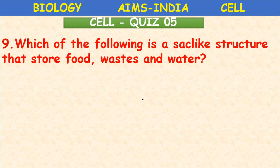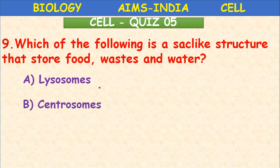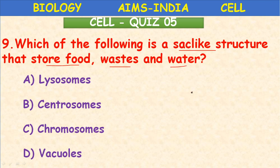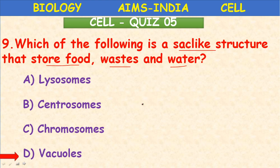Which of the following is a sac-like structure that stores food, wastes, and water — lysosomes, centrosomes, chromosomes, or vacuoles? In the exam, most students finish the quiz within 15 to 20 minutes, but the prescribed time is 45 minutes, so read each question thoroughly and select the option — don't be in a hurry. The answer is vacuoles, option D.